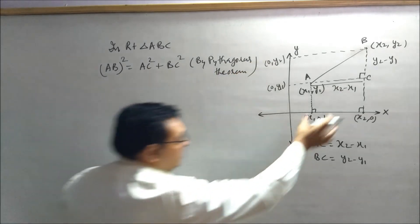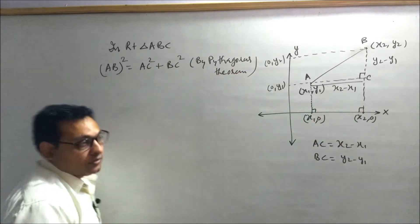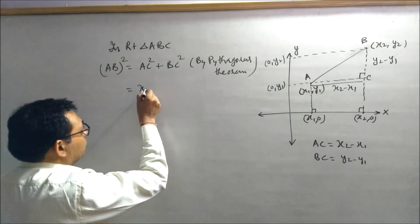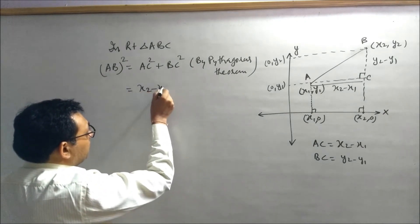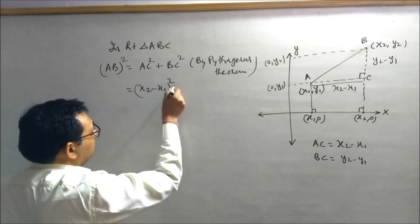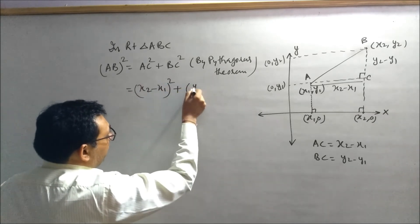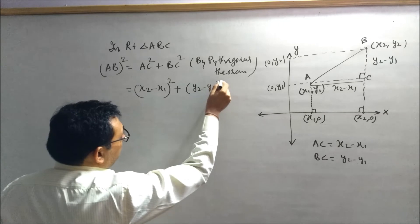AC equals x2 minus x1. So square of AC can be written as (x2 minus x1) whole square. BC can be written as (y2 minus y1) whole square.